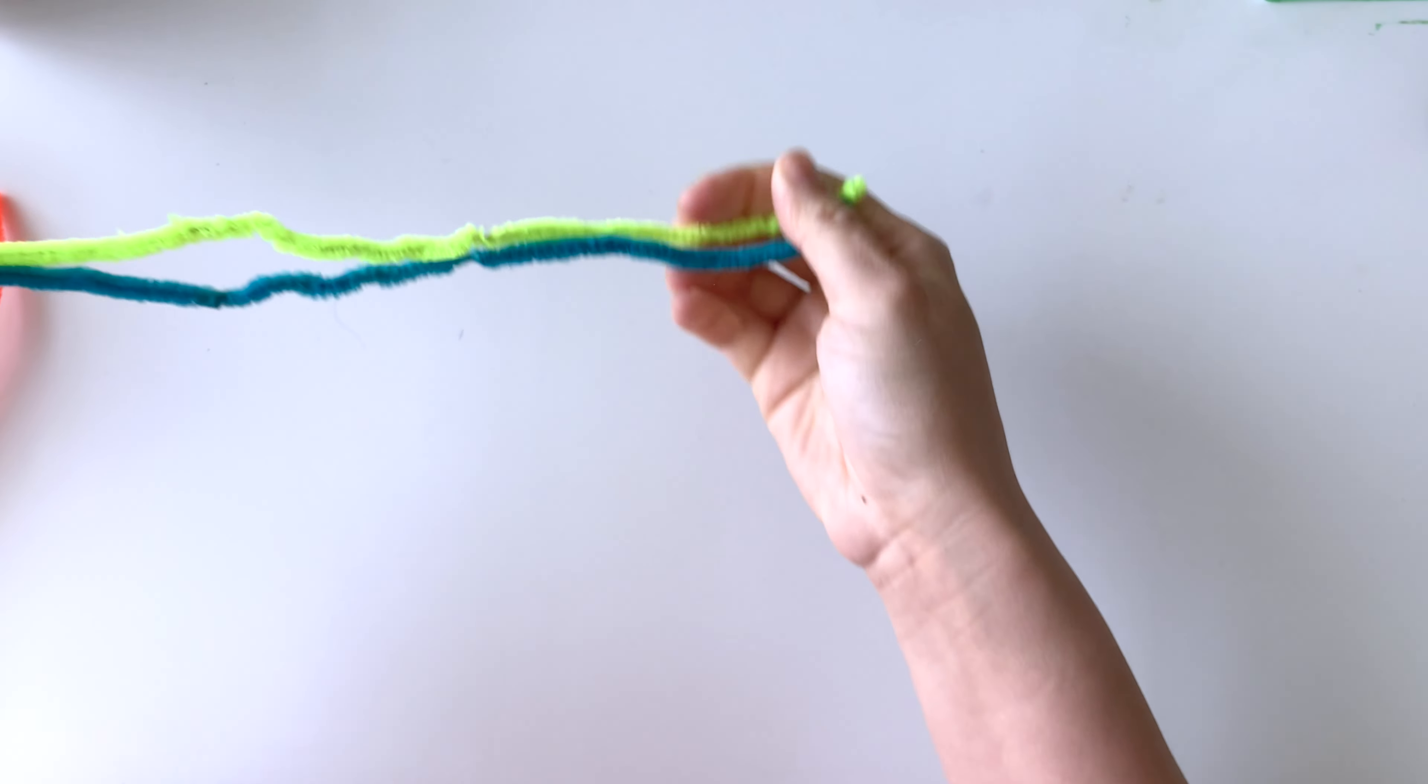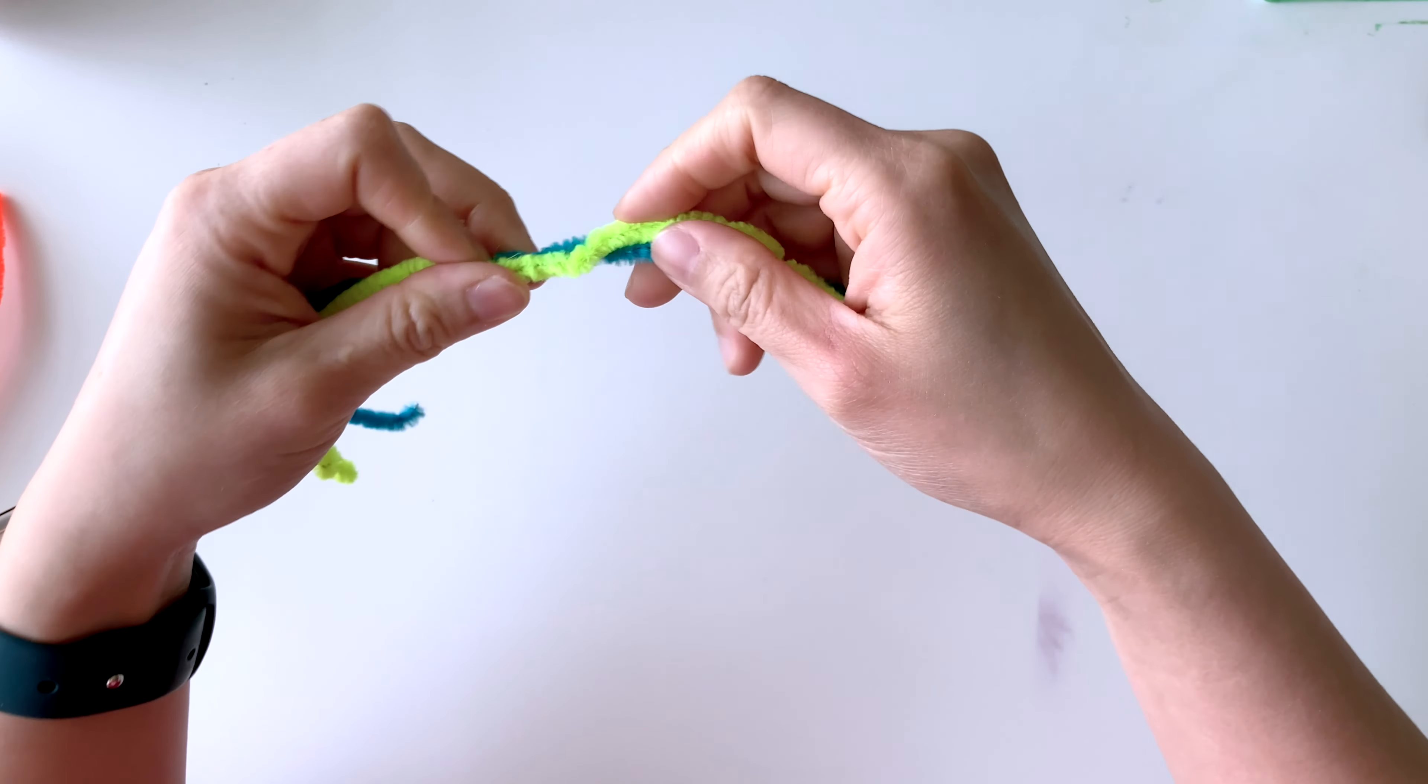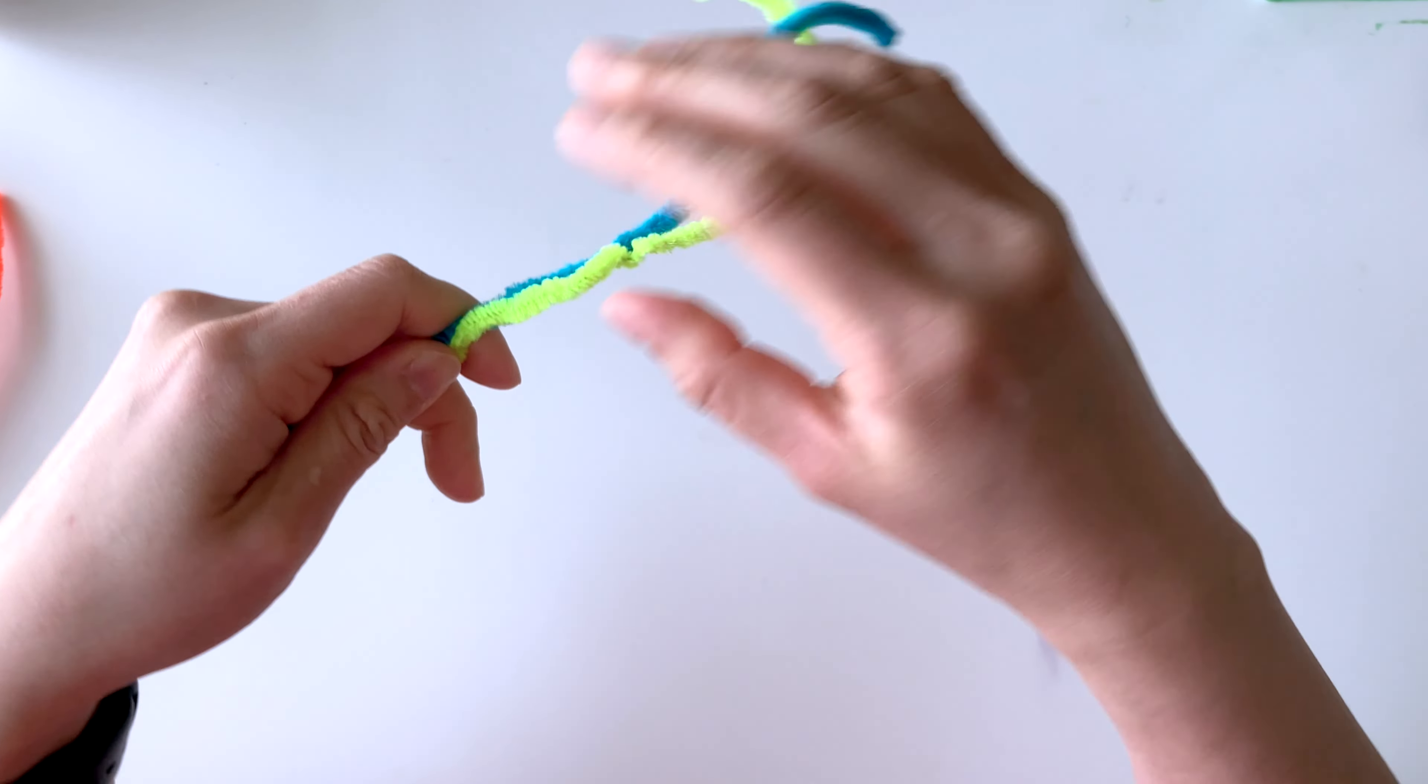She also loves her accessories, so I'm going to do a butterfly ring for her and hopefully this works out. So this is a pipe cleaner piece that I have from scrap that she had used before, but same idea, doesn't really matter.